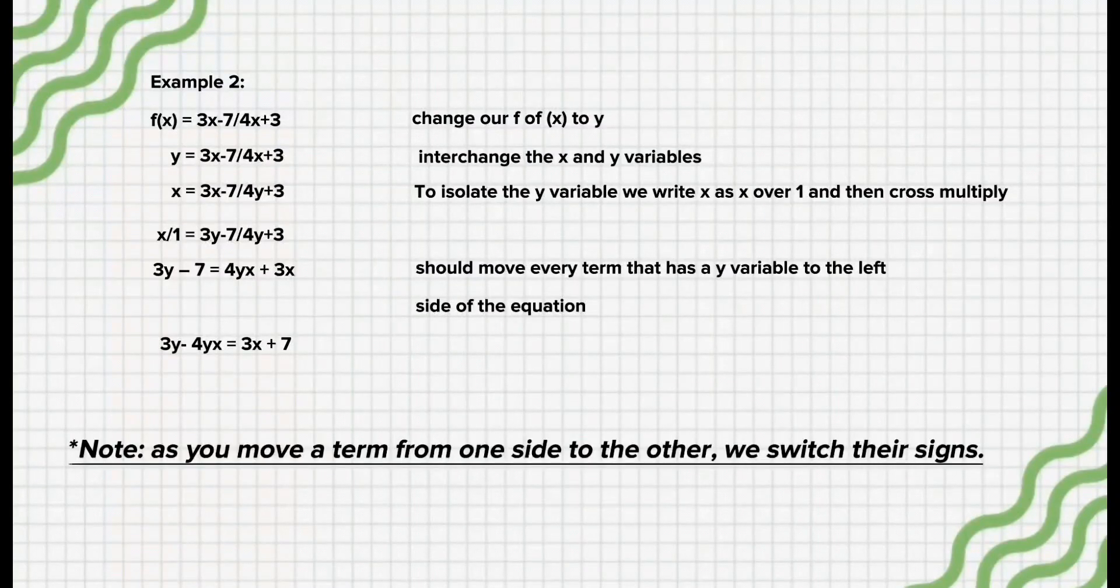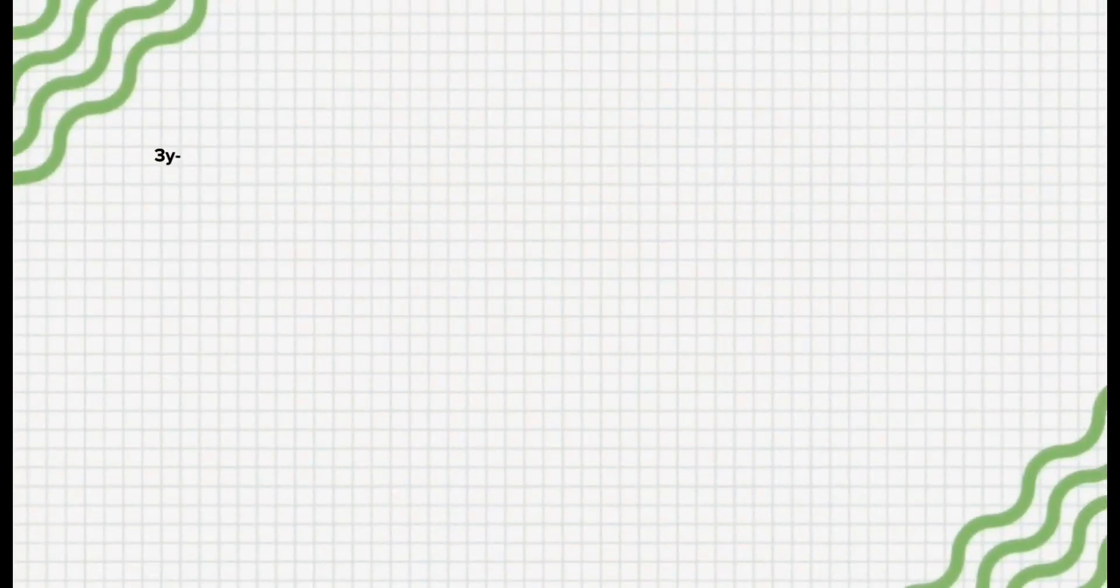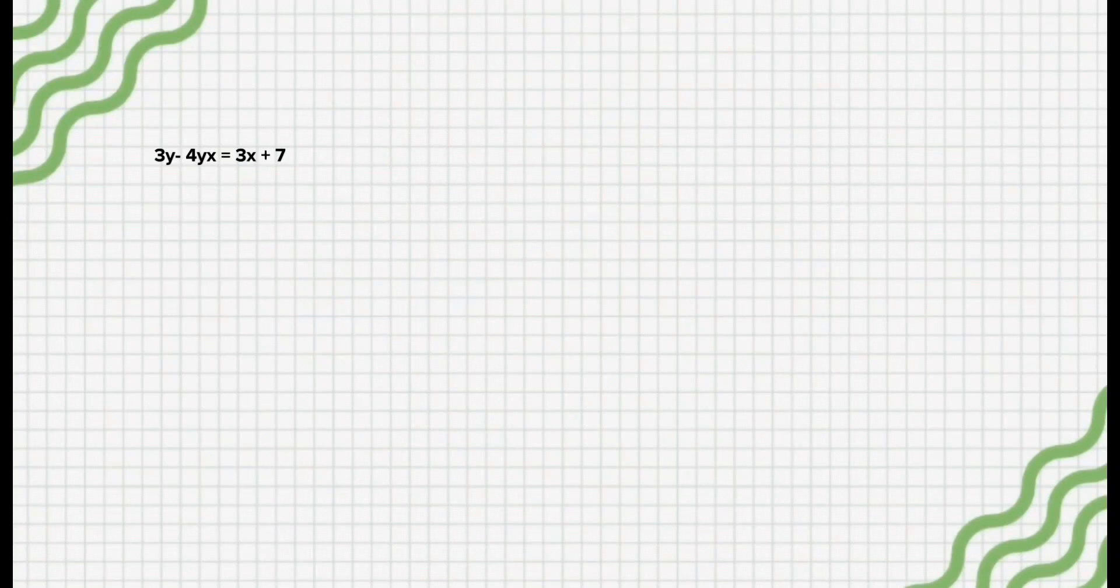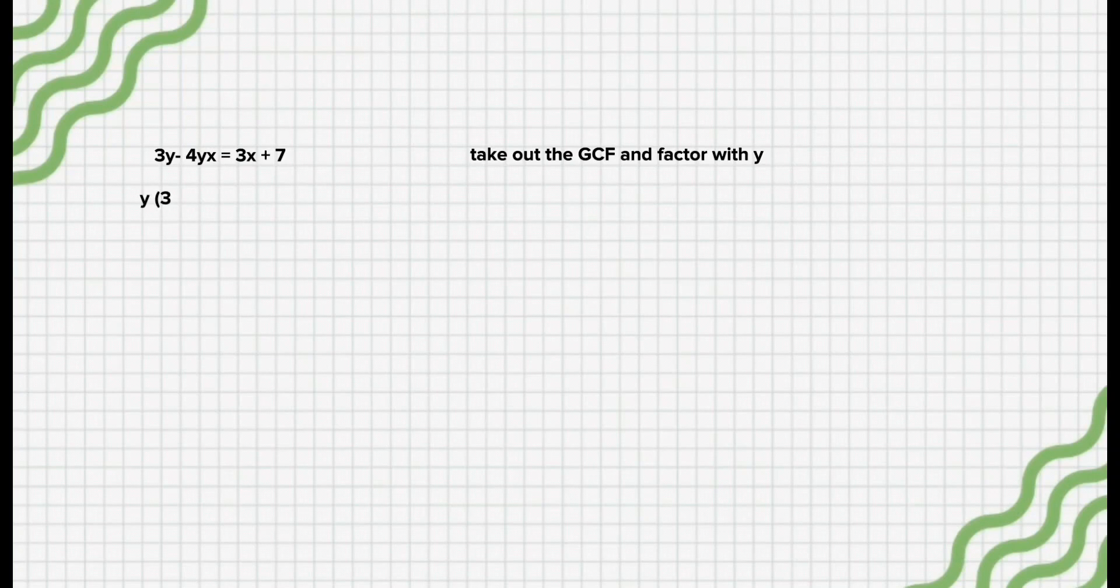Note, as we move a term from one side to the other, we switch their signs. So, now that we have all the y variables on one side, we can now take out the GCF and factor with y. We have y(3 - 4x) = 3x + 7.